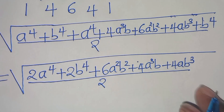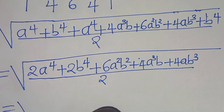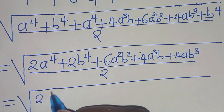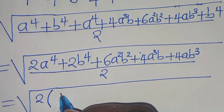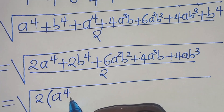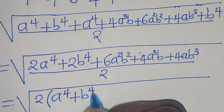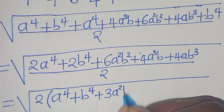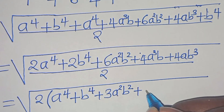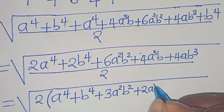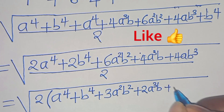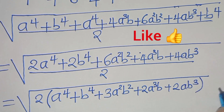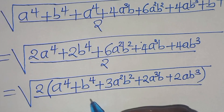The next step: we can factor out 2 from the numerator, so that in the numerator part we'll have a to the power of 4, plus b to the power of 4, plus 3a to the power of 2 times b to the power of 2, plus 2a to the power of 3 times b, plus 2a times b to the power of 3, in parentheses — everything divided by 2.